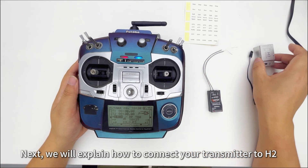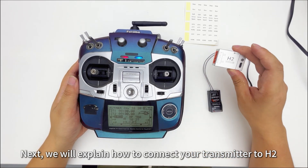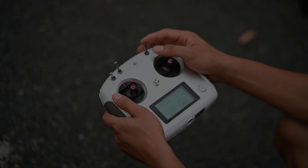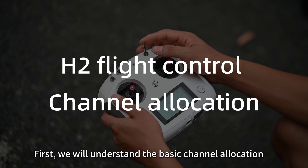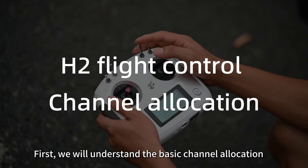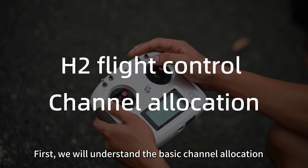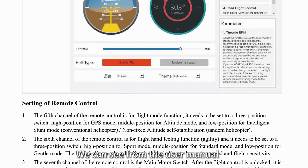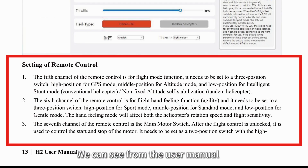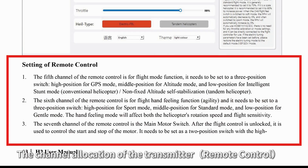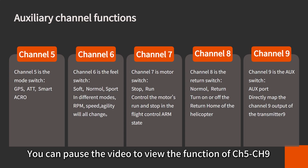We will explain how to connect your transmitter to H2. First, we will understand the basic channel allocation. We can see from the user manual the channel allocation of the transmitter. You can pause the video to view the function of CH5 through CH9.